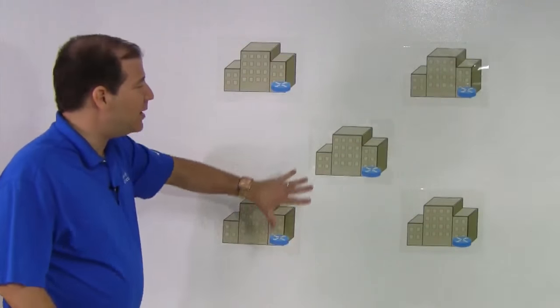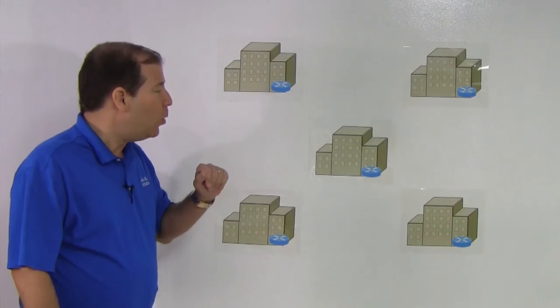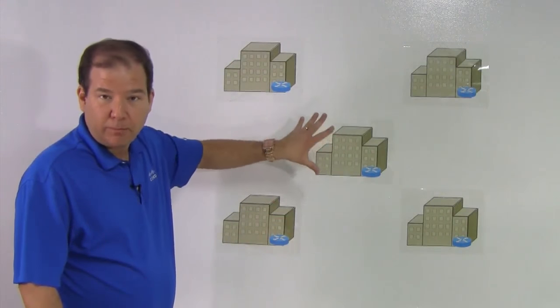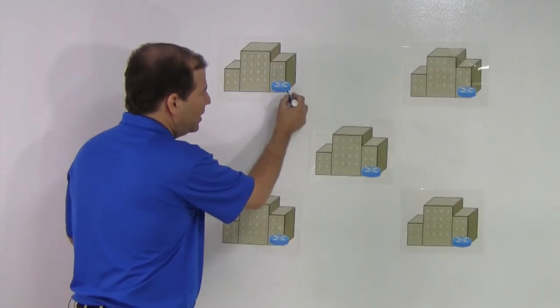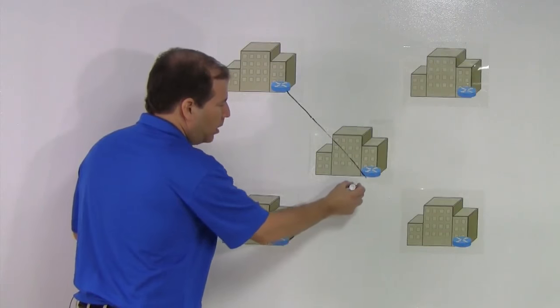Let's take a simple example. Let's say that we've got these five different buildings. Let's pretend this is a university campus. What we could do, one option, is to have a central hub that everybody points back to, and we could interconnect all the buildings back to this one location.